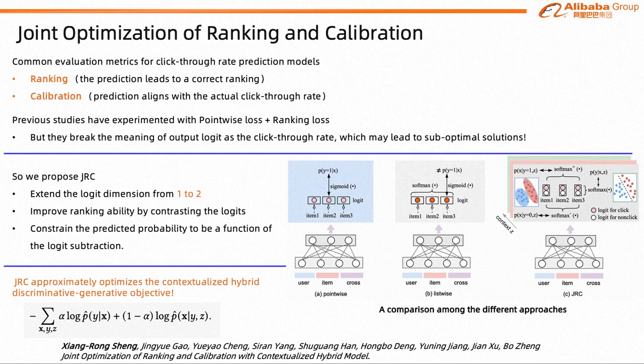In the case of industrial CTR prediction, the dominant approach is point-wise loss, attributed to its calibration ability as the prediction represents the click probability.